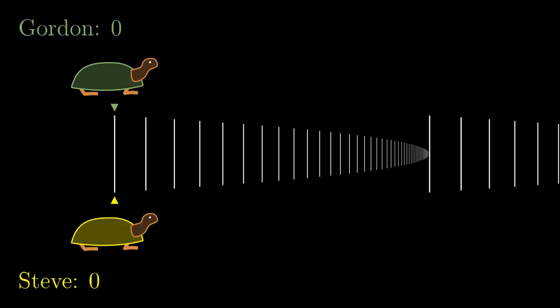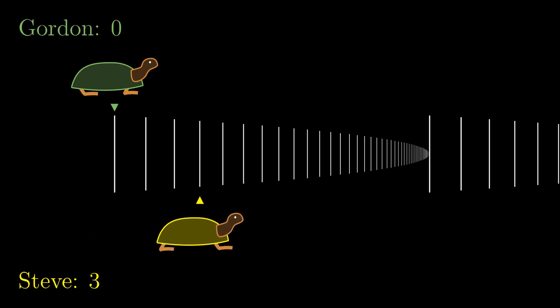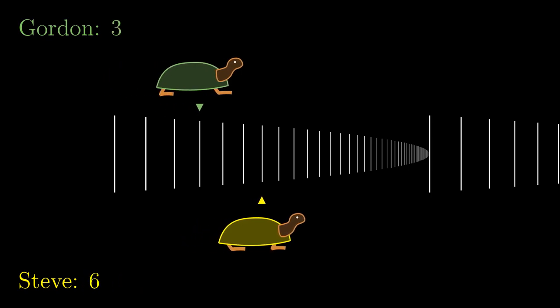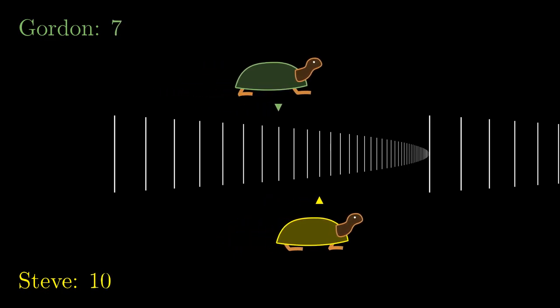Consider two turtles, Gordon and Steve, racing on ordinals. Gordon starts at index 0 but Steve is starting ahead by 3 steps. Now they begin to run. After one step, Gordon is at index 1 while Steve is at index 3 plus 1, that is 4. It is similar for the second step, the third one and so on.